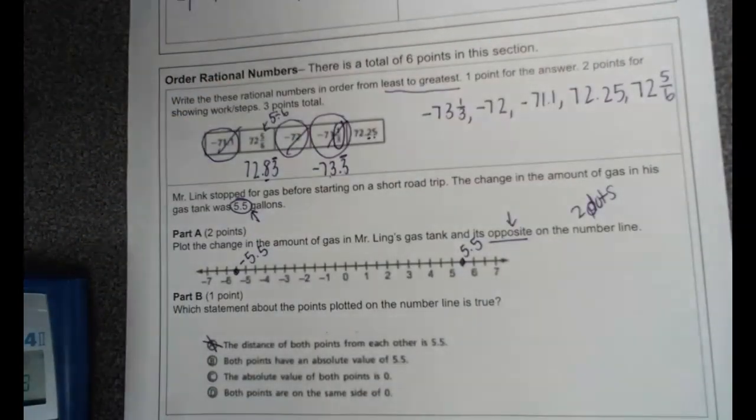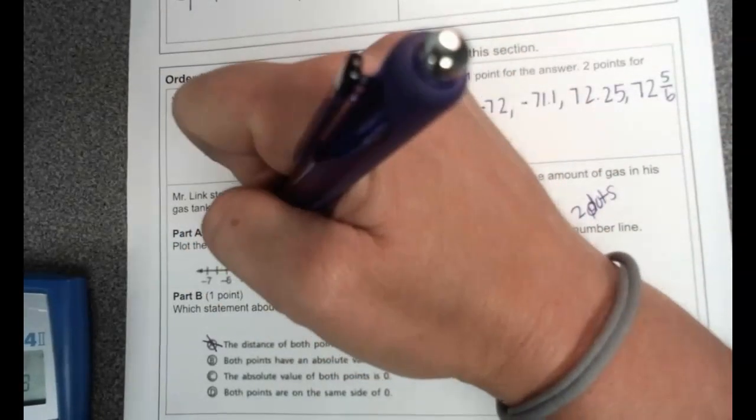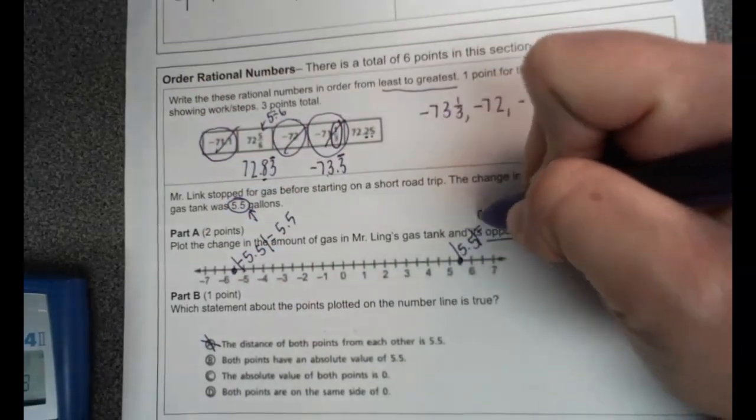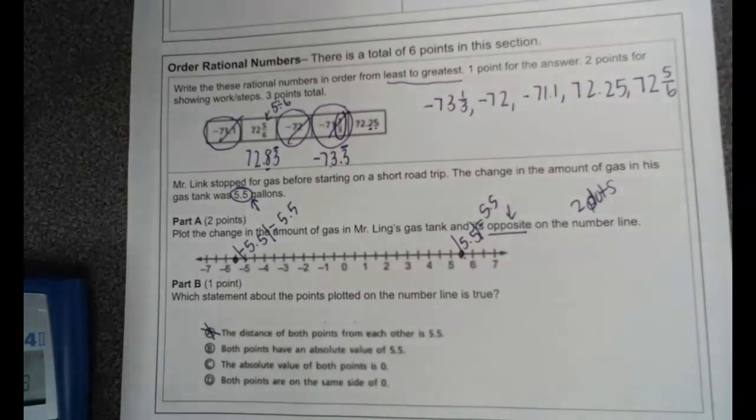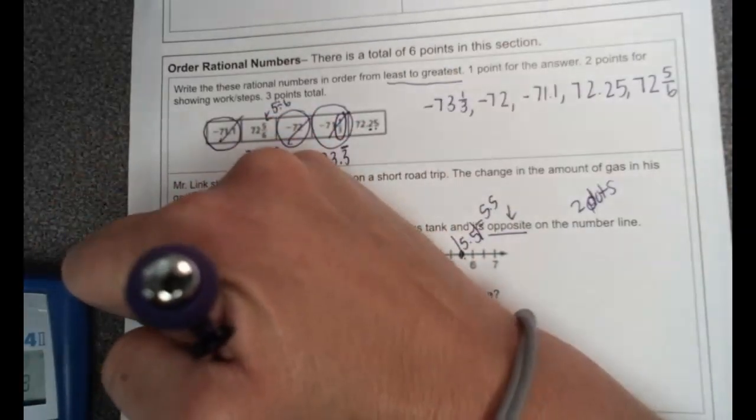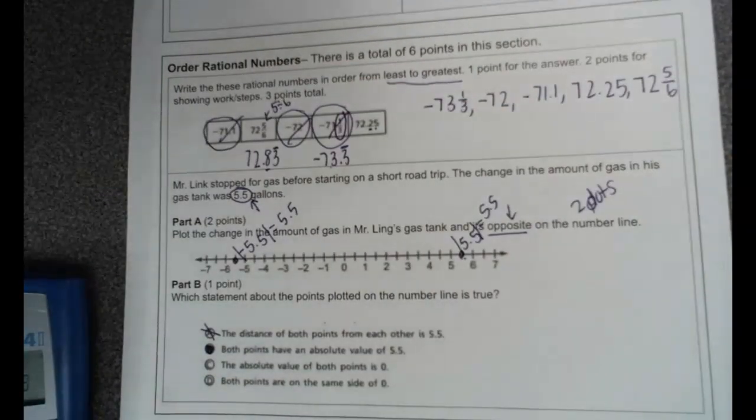Both points have an absolute value of 5.5. Absolute value means the distance to zero on a number line, and each of these, if we find the absolute value, is going to just be 5.5 because absolute values have to be positive. 5.5 is 5.5 spots away from zero, and negative 5.5 is 5.5 spots away from zero. So that is our correct answer. And that is it. Remember, there is a Gimkit that you can also like.